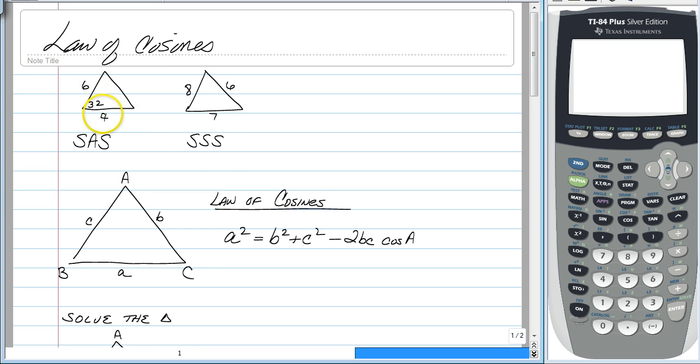The pattern you need is either side angle side or side, side, side. And here is the law of cosines. It's a squared is equal to b squared plus c squared minus 2bc cosine of a.